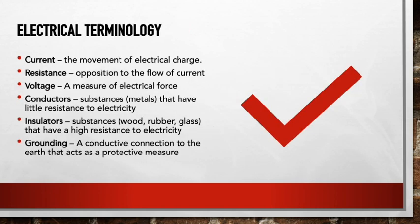Terminology: current is the movement of electrical charge. Resistance is anything that opposes the flow of current — wood has a much higher resistance than copper, for example. Voltage is a measure of electrical force. Conductors are substances with little resistance to electricity, such as copper. Insulators are materials like wood, rubber, or glass that insulate electricity from coming out of the conductor. Grounding is a protective measure that transfers rogue electricity into the ground rather than sparking at the receptacle or tool.